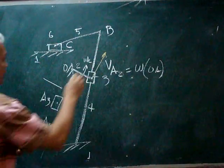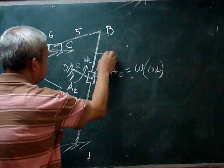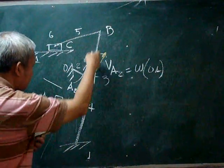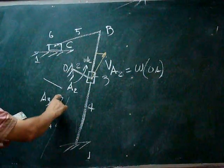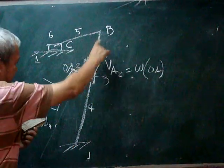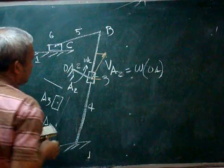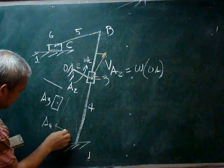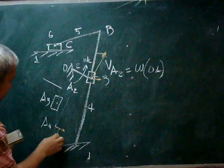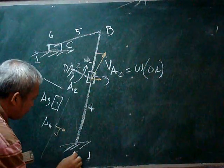We have a sliding component of the velocity, which is the relative velocity of body 3 along body 4. That component is the velocity of that point, which must be perpendicular to A4O2.